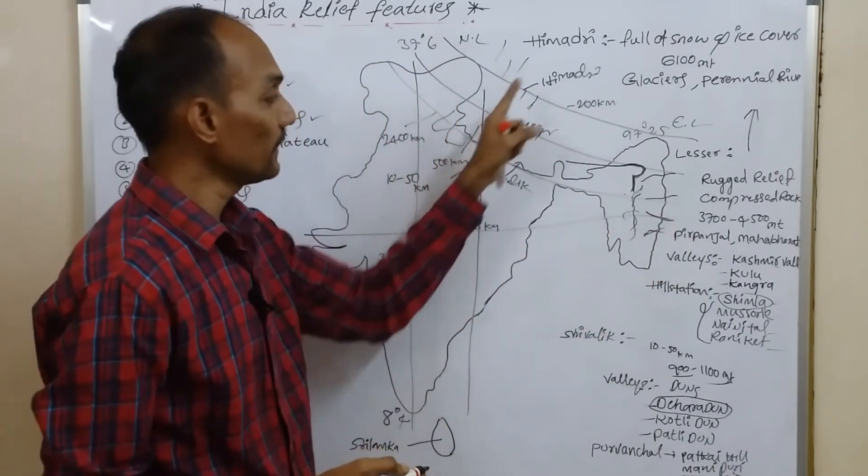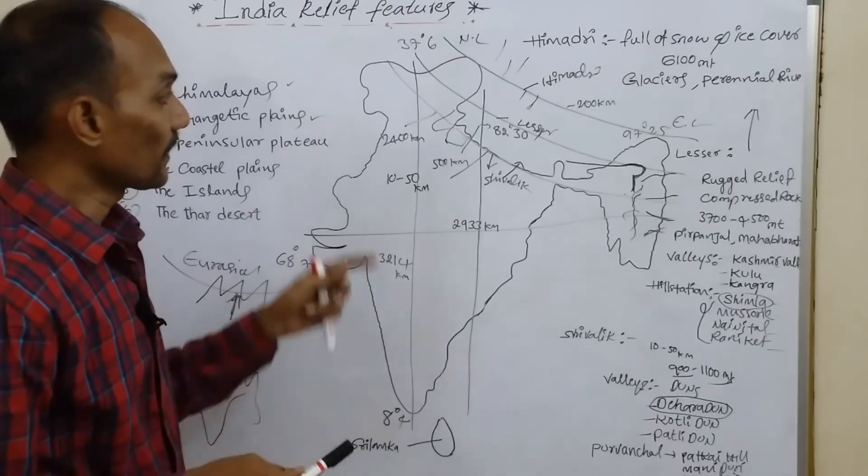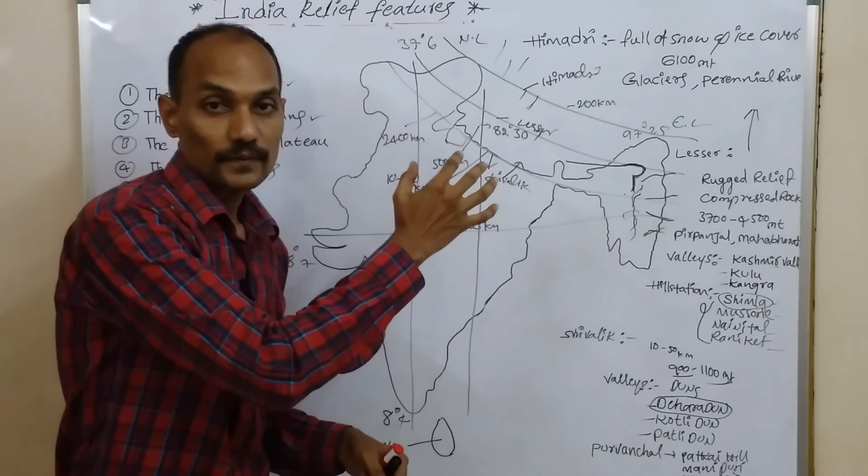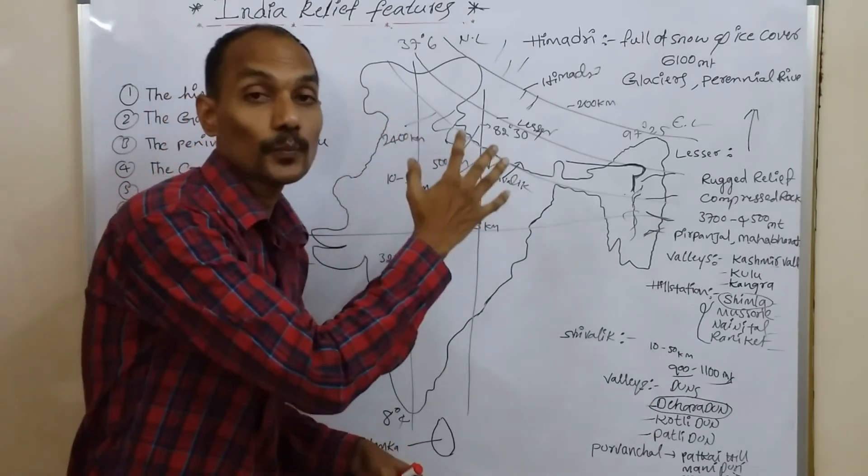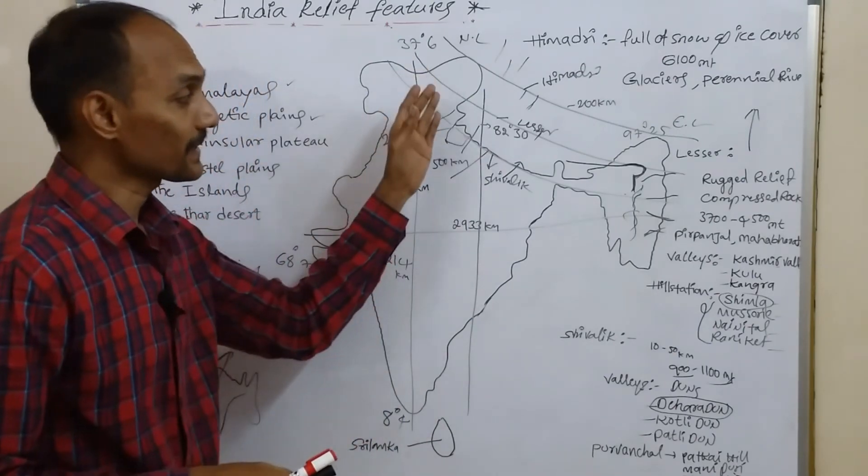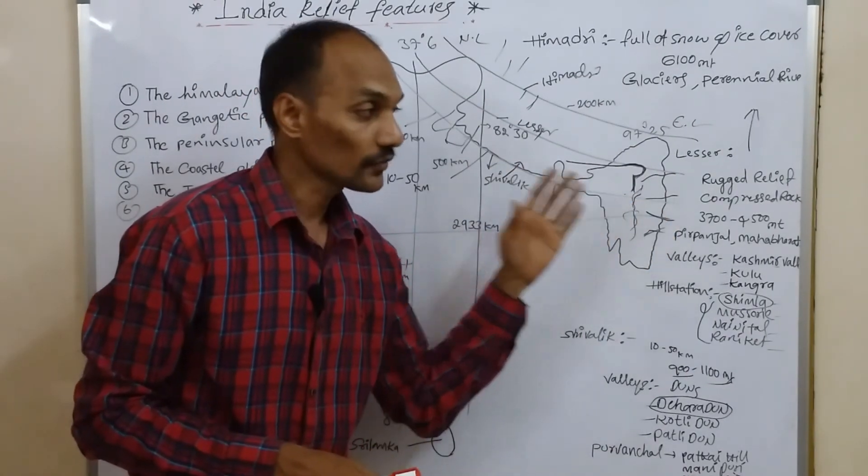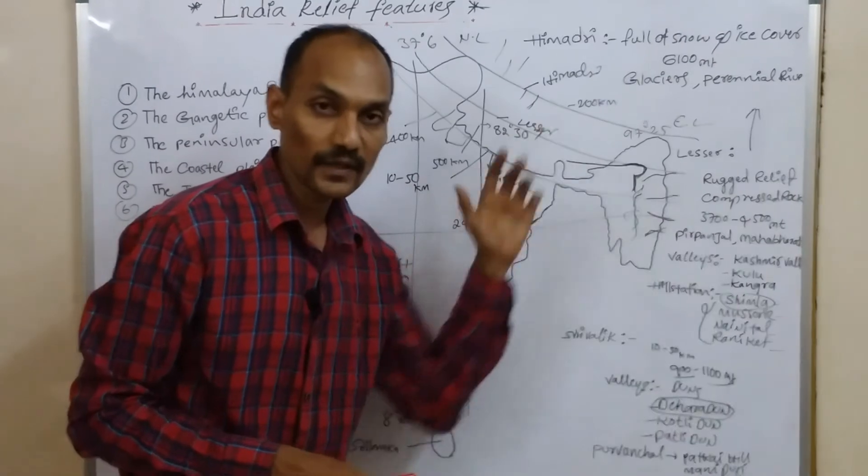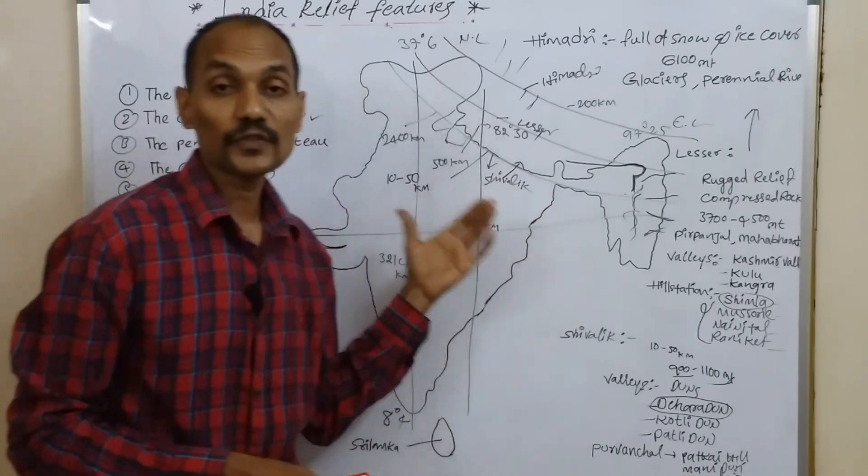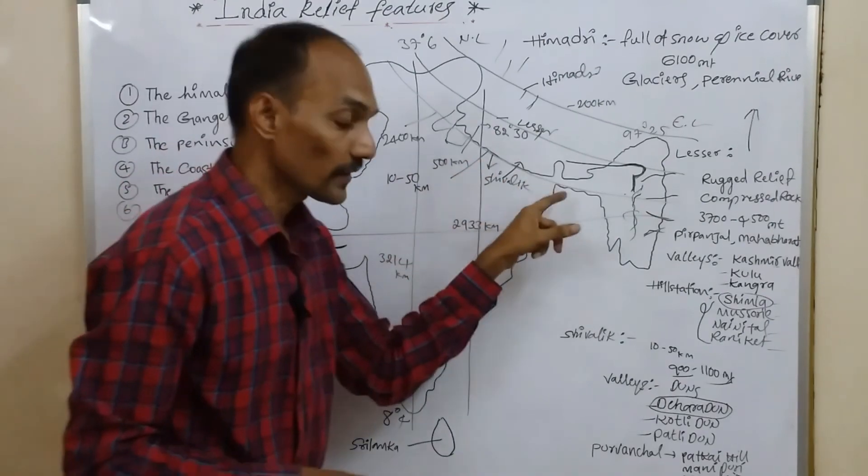One more thing: the importance of the Himalayas. These Himalayas act like barriers to protect from the cold wind of Central Asia. Also, these Himalayas influence the climate of India and summer rains, monsoon climate and summer rains. Here one question will arise: if there were no Himalayas, what would happen? If it's absent, what would happen? If there were no Himalayas, this region would have been drier.